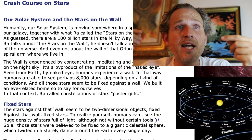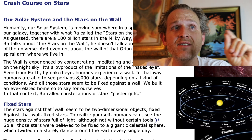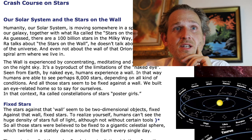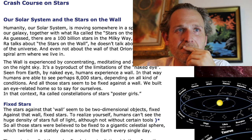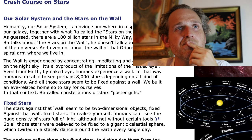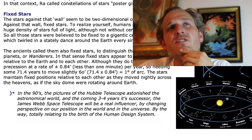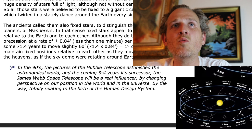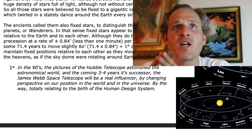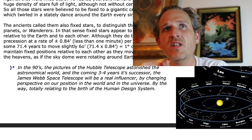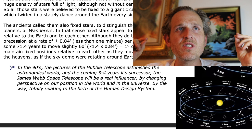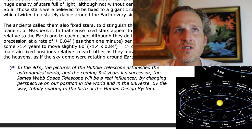We built an eye-related home for ourselves. In that context, Ra calls constellations of stars poster girls. Fixed stars — the stars against that wall seem to be two-dimensional objects fixed against that wall. To realize yourself, humans can't see the huge density of stars full of light.